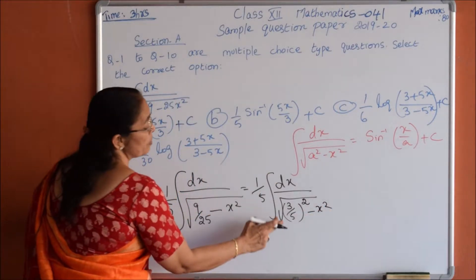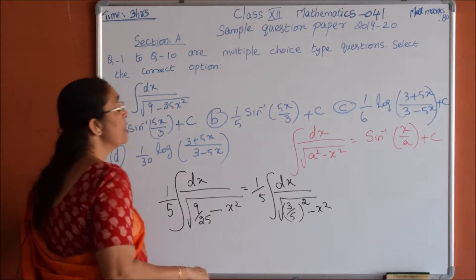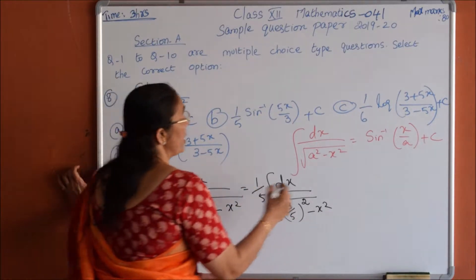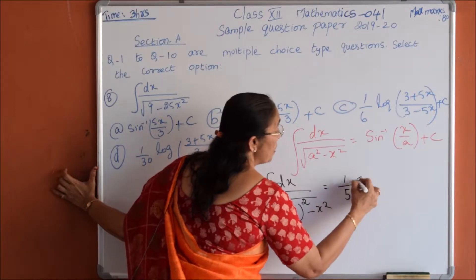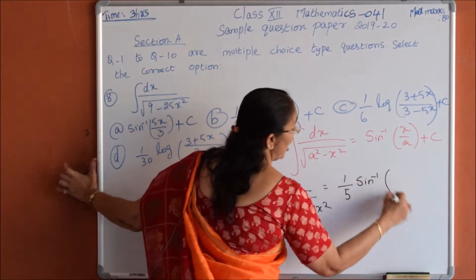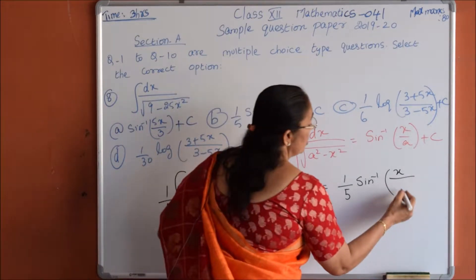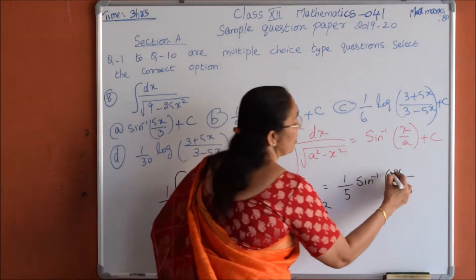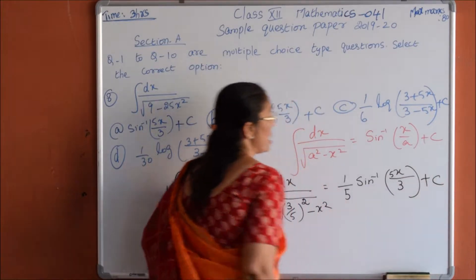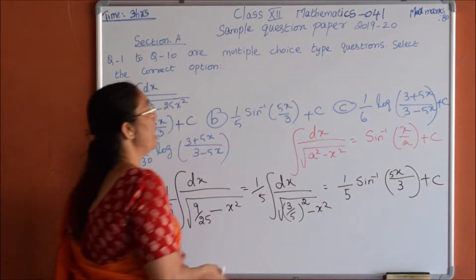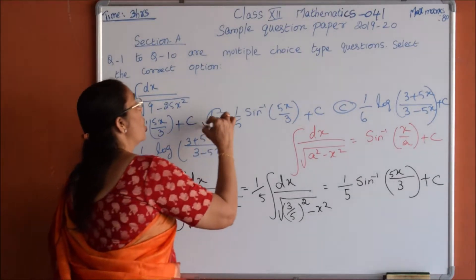Now it is in the form of dx by root over a squared minus x squared, where a is 3 by 5. Using the formula, with 1 by 5 outside: sin inverse of x by a — a is 3 by 5, so x divided by (3/5) gives 5x by 3. Therefore the answer is 1 by 5 sin inverse of 5x by 3 plus c, option B.